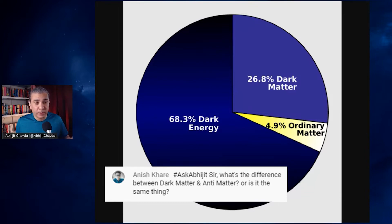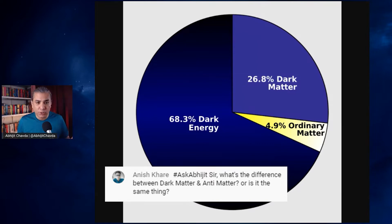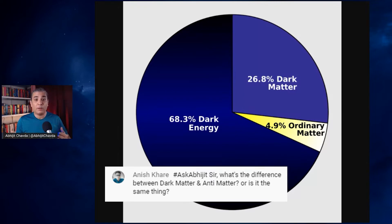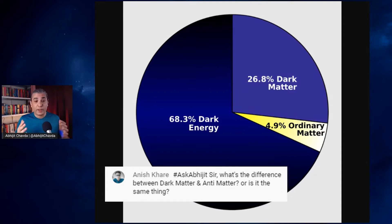Dark energy is a really mysterious thing. Dark matter is slightly better understood — it is something that interacts only gravitationally. It does not interact via the electromagnetic interaction, the weak interaction, or the strong interaction. It only interacts with ordinary matter via the force of gravity, so this could be some form of purely gravitating particle or a family of particles.